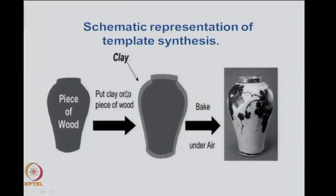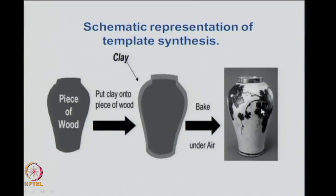You put some material — clay in this case — but in our case you may use any nanoparticle or any other material which can be a liquid and will form a shape. The shape is given by the template. This piece of wood will be replaced by some template in the form of small structures, and when we remove that template, you will get small structures which are dependent on the shape of the template.